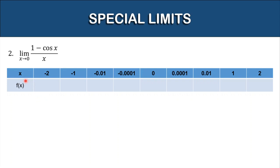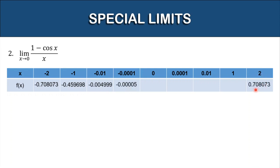By completing our table of values: if x is negative 2, here is the value of our function; continuing with values closer to zero from both sides. From the right side, if x is 2 we have this value; if x is 1, here is the value. As we notice, they are both approaching a specific number, and that is zero.